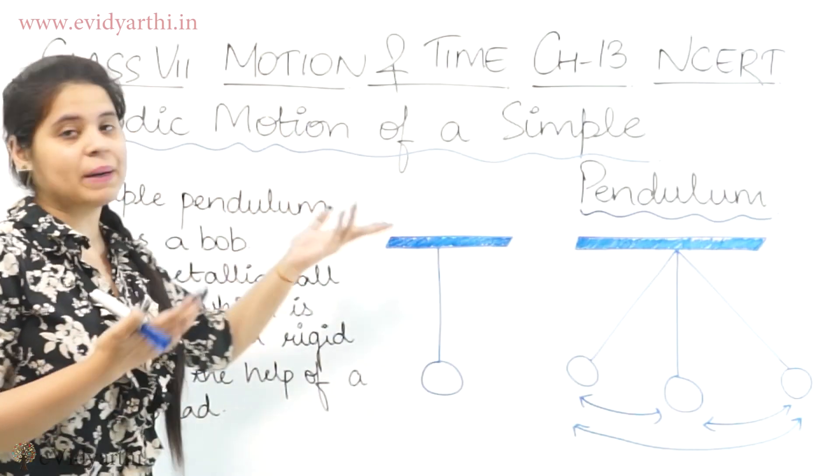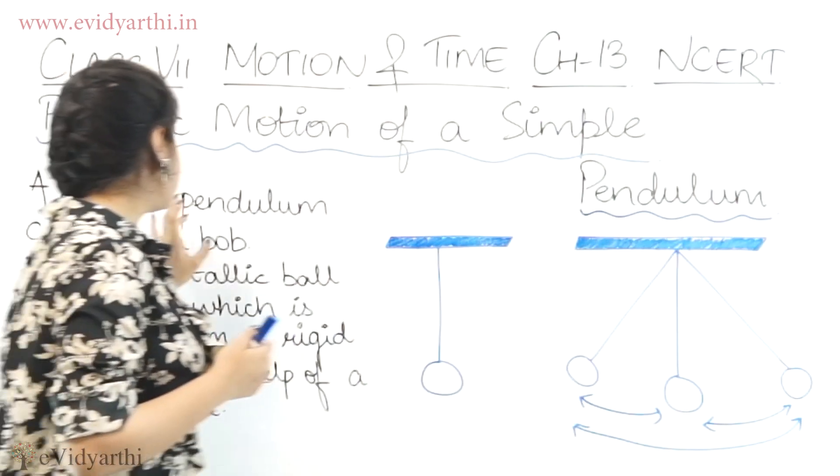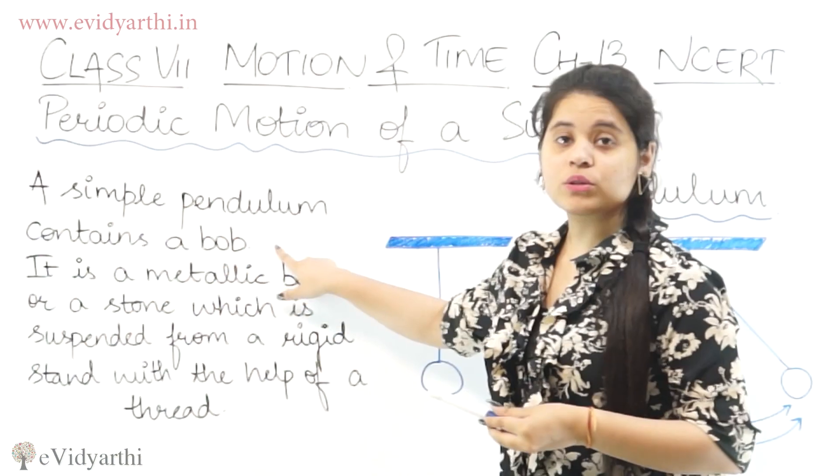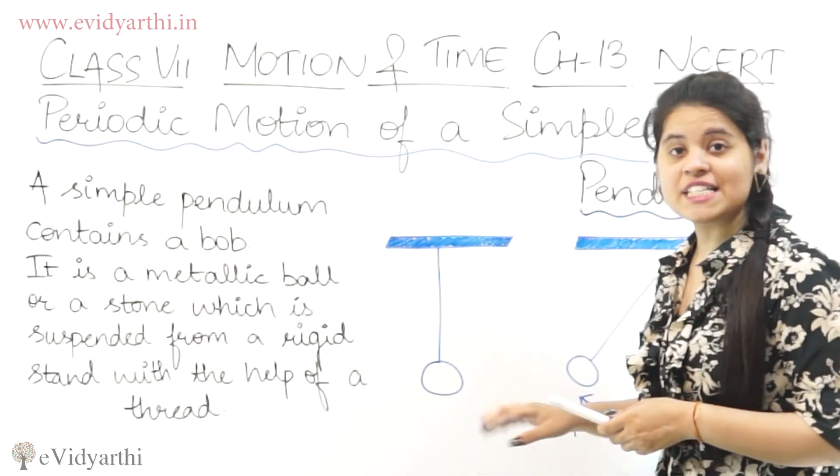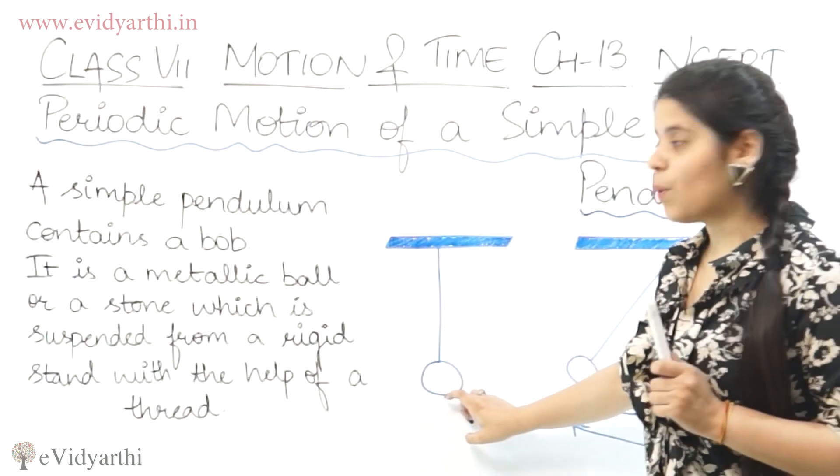So first of all, what is the pendulum? Simple pendulum contains a bob. What is the bob? This one. This piece we call the bob.